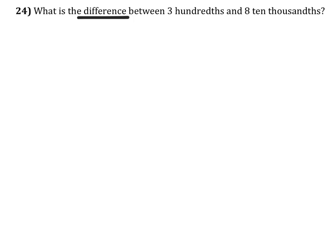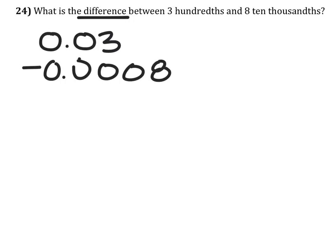So we're going to take three hundredths, so zero point, tenths, hundredths, and we will subtract from these eight ten thousandths. So we got tenths, hundredths, thousandths, and eight of those ten thousandths.